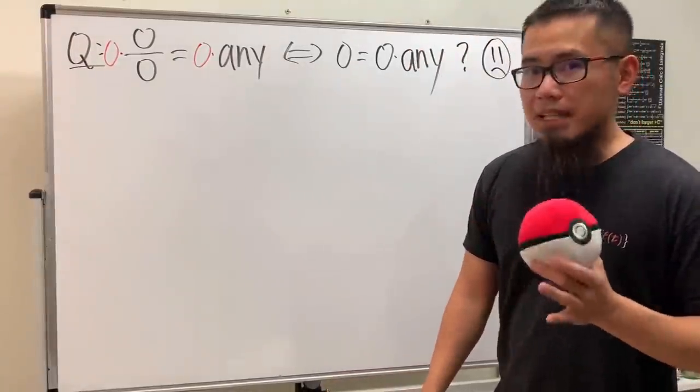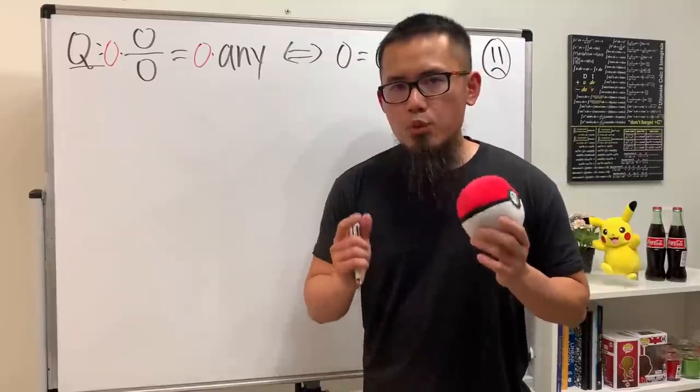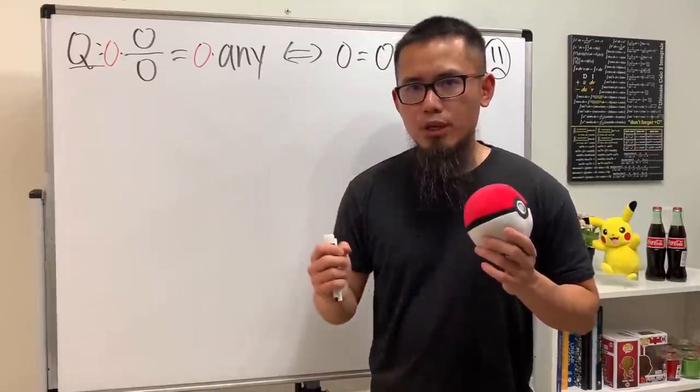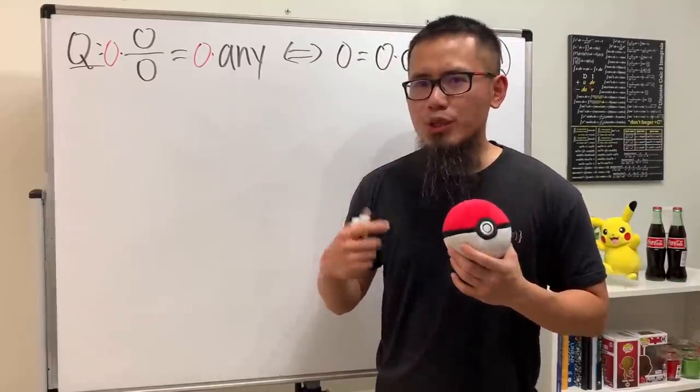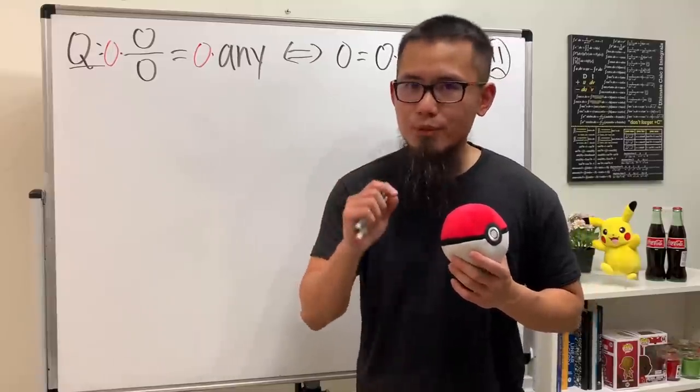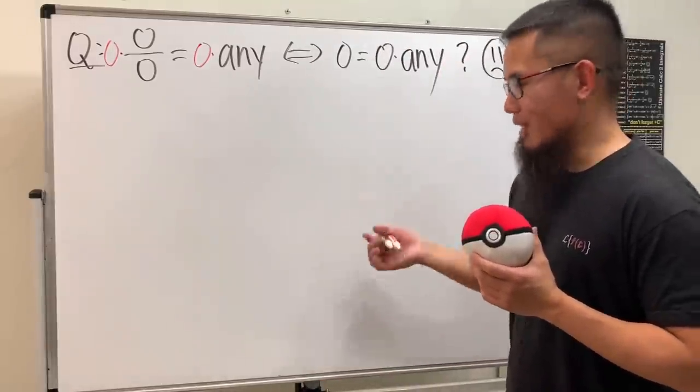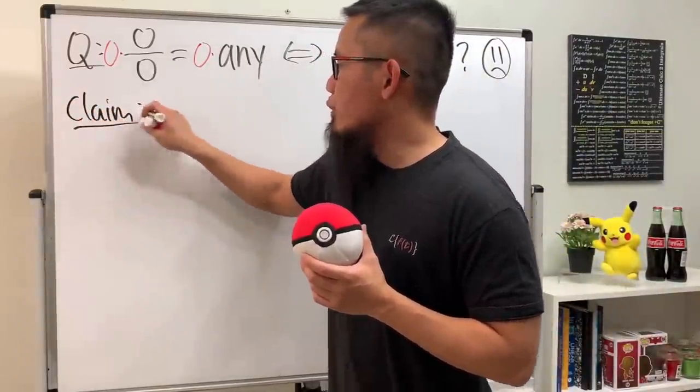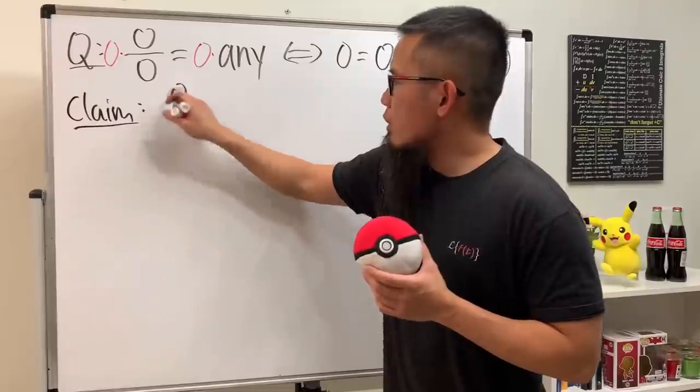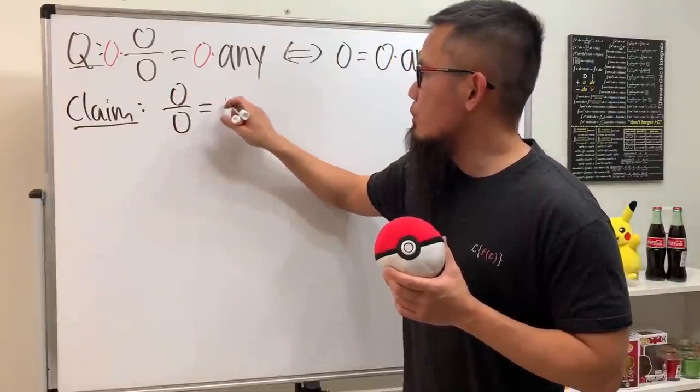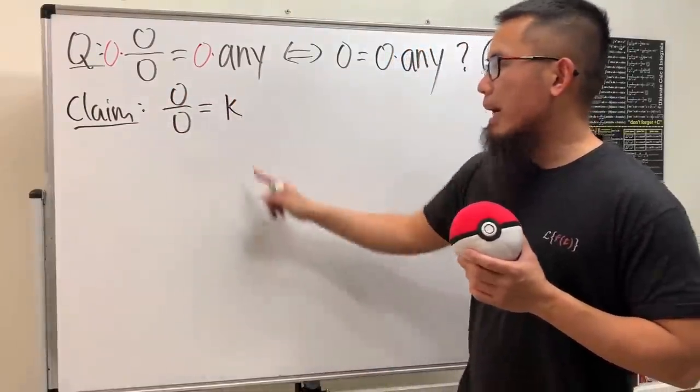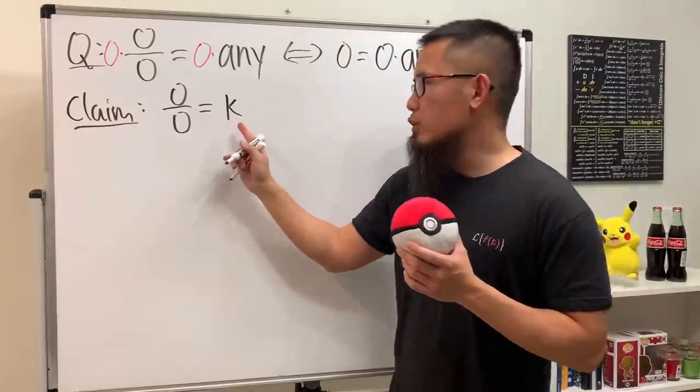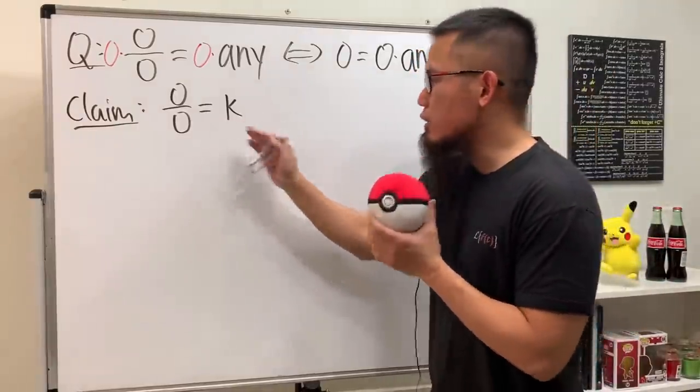In fact I claim if you ever want to define zero over zero, then perhaps you should define it as zero. Why? Well you'll see the following reason and I'm going to make my claim right now. Zero over zero should be equal to some number k, but if I want to say the only number you should have right here is equal to zero.